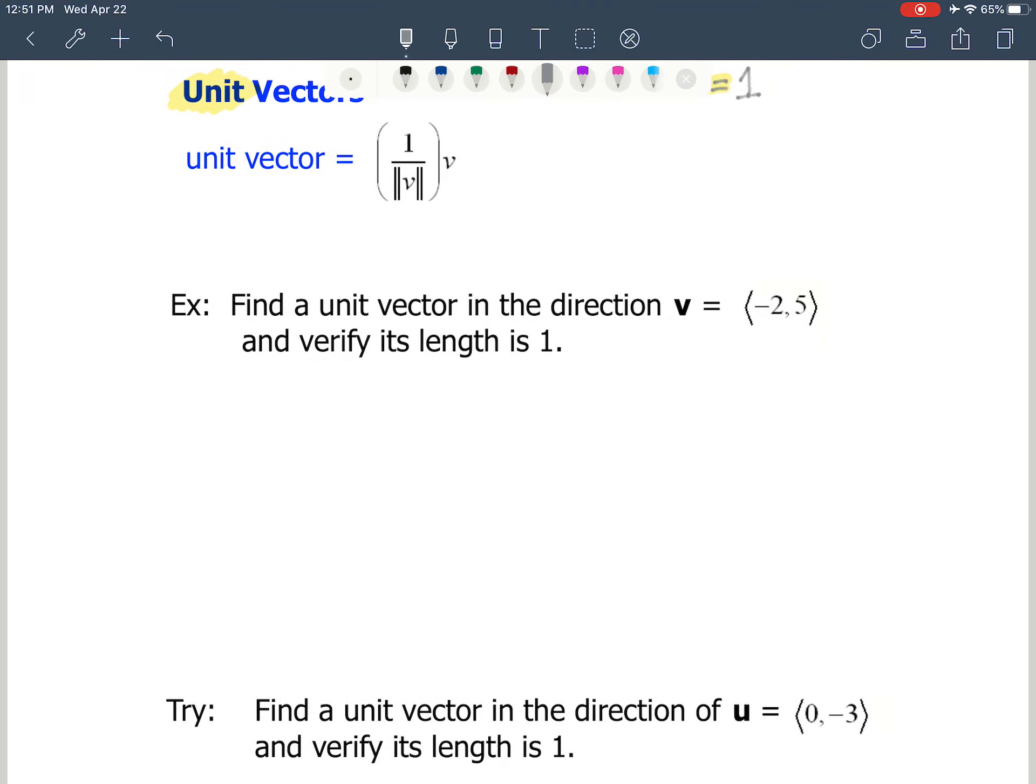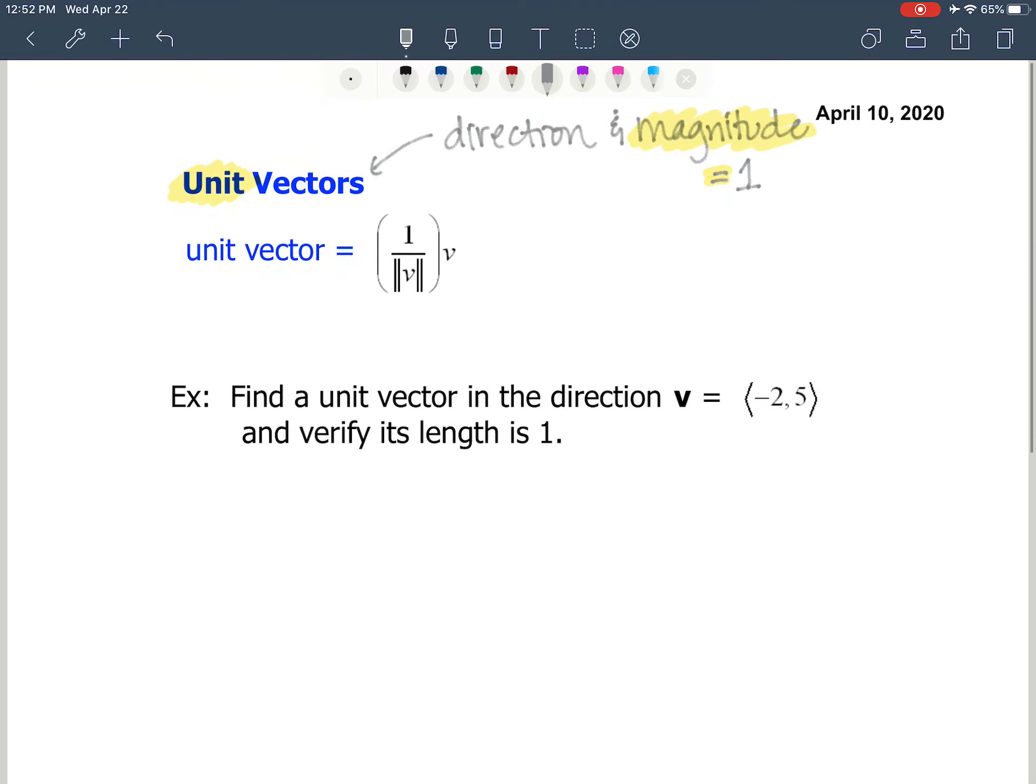Sometimes we need just the direction of a vector. Therefore, we need to divide out the magnitude. So when I say divide out, let's just say my magnitude was 25. I need to divide out 25. When I divide out 25, I get a distance of 1. It's kind of pretty cool.